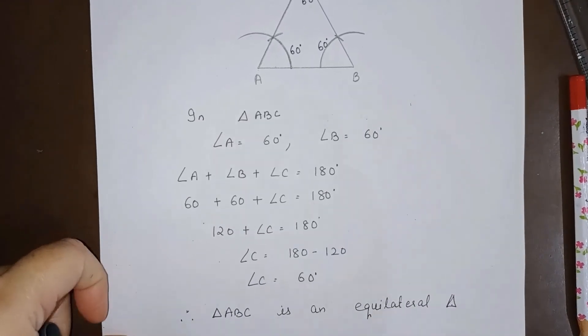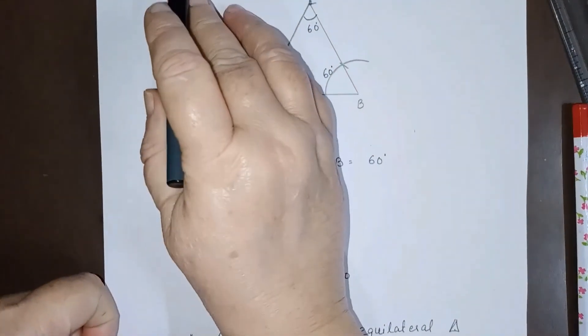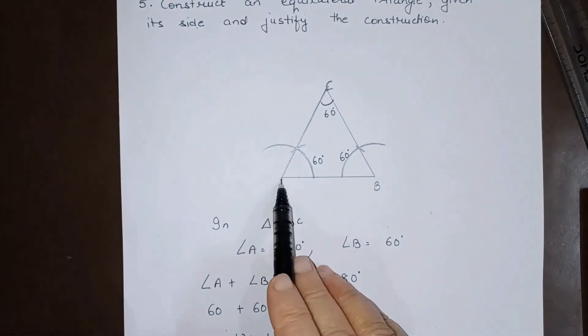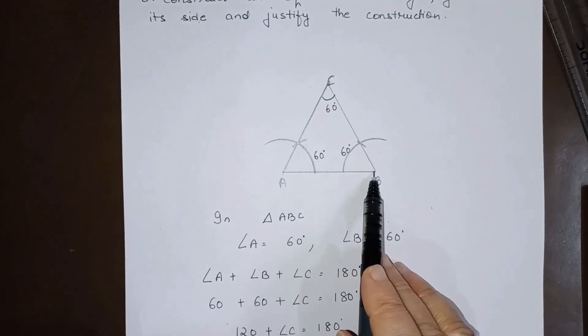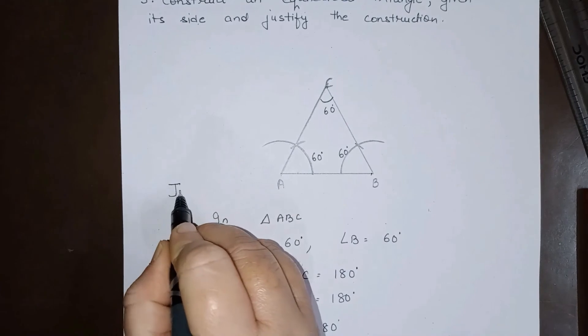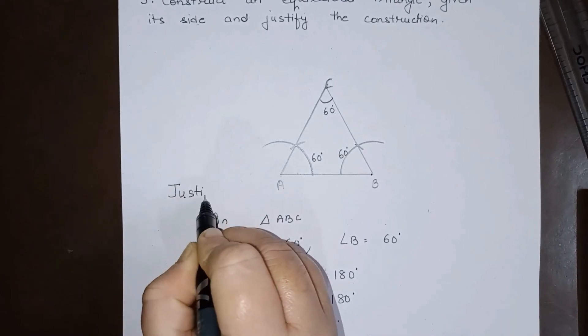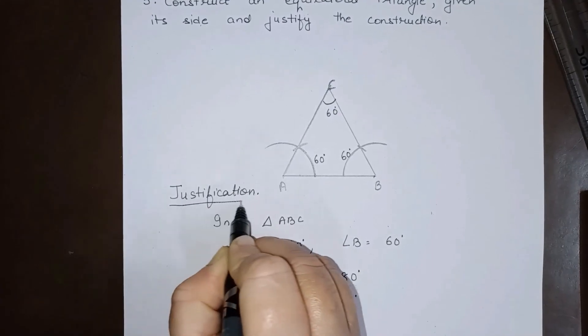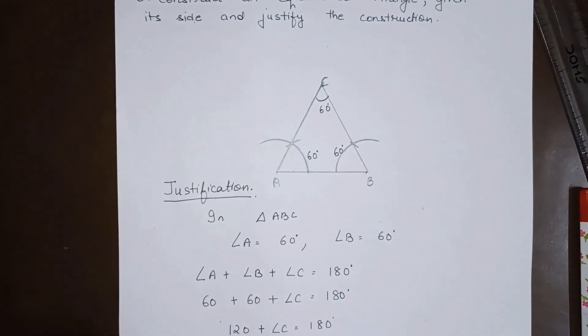So this is the justification part. They were saying construct an equilateral triangle given its side. So we have drawn a side of any length, and this is the justification that we are getting all the angles to be 60 degree. So this is our solution.